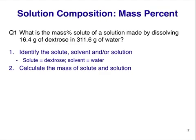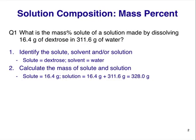The next step, if necessary, is to calculate the masses of the solute and solution. These should be in the same units, usually grams, but they may be kilograms or something else, as long as they are both in the same units. The mass of solute is easy: 16.4 grams. But the mass of the solution is not given. Be careful — solvent and solution are not the same. The solution is the solute plus the solvent. This is a very common student mistake. In this case, we must add together the 16.4 grams of solute and 311.6 grams of solvent. The mass of solution is 328.0 grams.